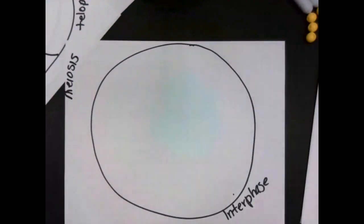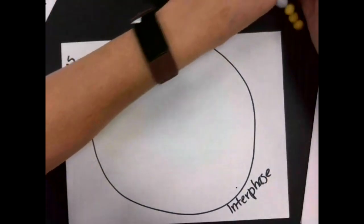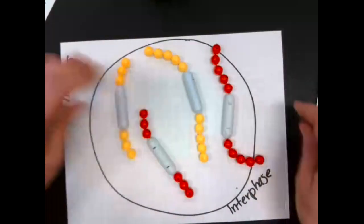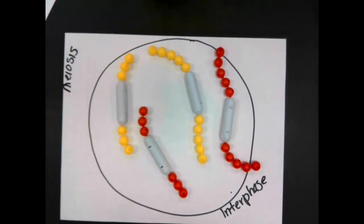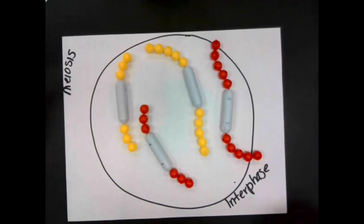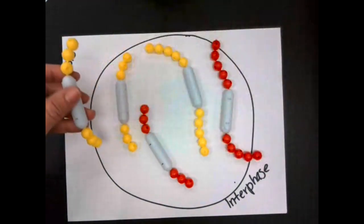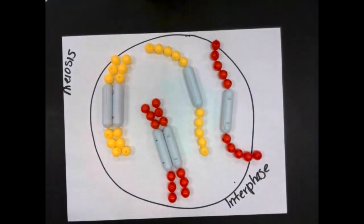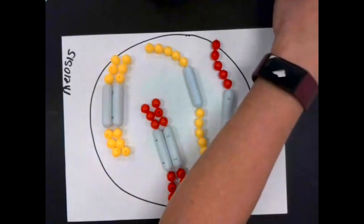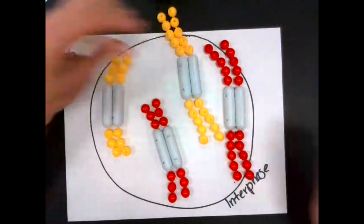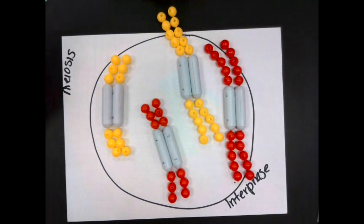We're going to move on to meiosis. Our goal here is to make genetically different cells — these are going to be gametes, to make gametes to reproduce. So it starts the same way as mitosis: we're going to make exact copies of the chromosomes. It will go through a growth phase and interphase as the cell gets larger, then it's going to duplicate that DNA. So we have duplicated that DNA. Now this is the portion where it is going to begin to get different.